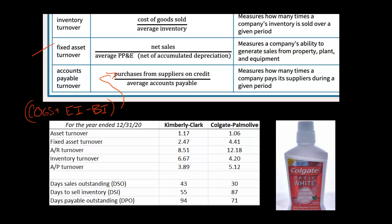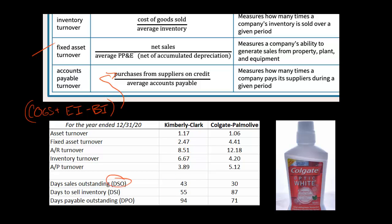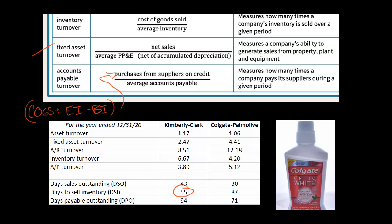In terms of days sales outstanding — how long it takes to collect receivables — Colgate-Palmolive is collecting in just 30 days, whereas it takes 43 days for Kimberly-Clark. So Colgate-Palmolive has an advantage there. When it comes to days to sell inventory, though, Kimberly-Clark is dominating: just 55 days to sell their inventory compared to Colgate-Palmolive at 87 days. So Kimberly-Clark has a clear advantage there.